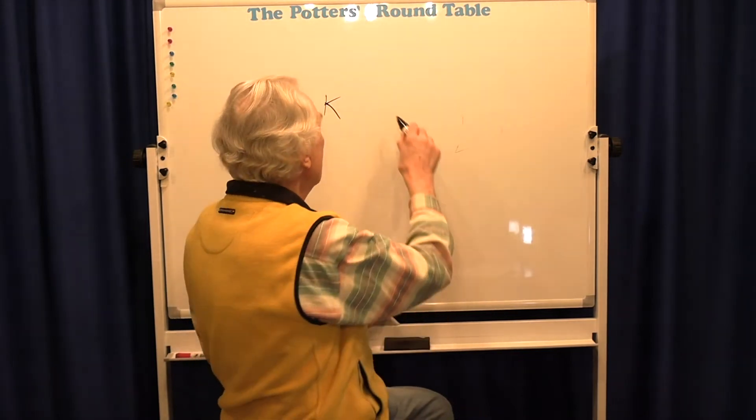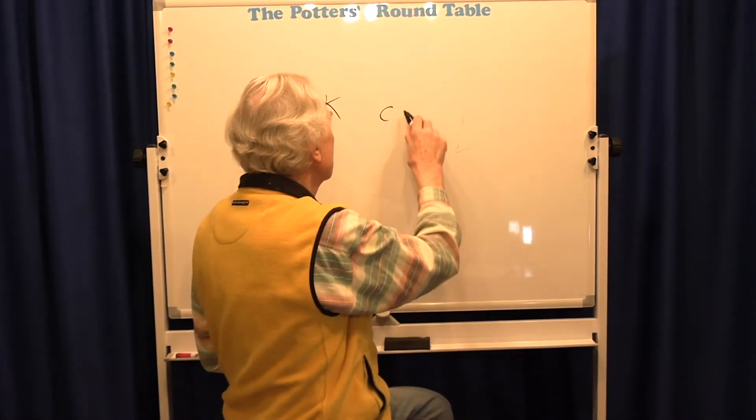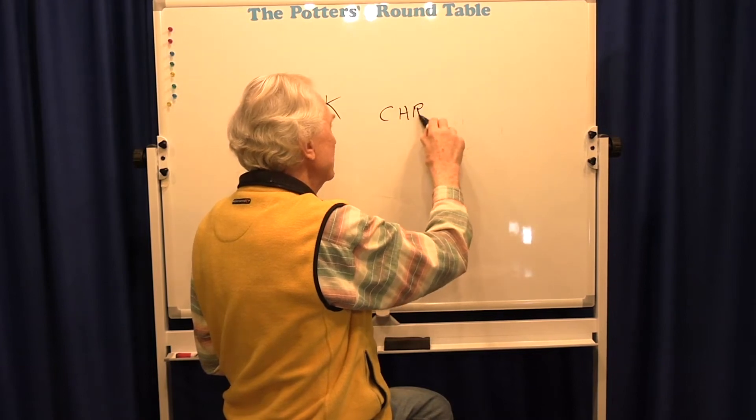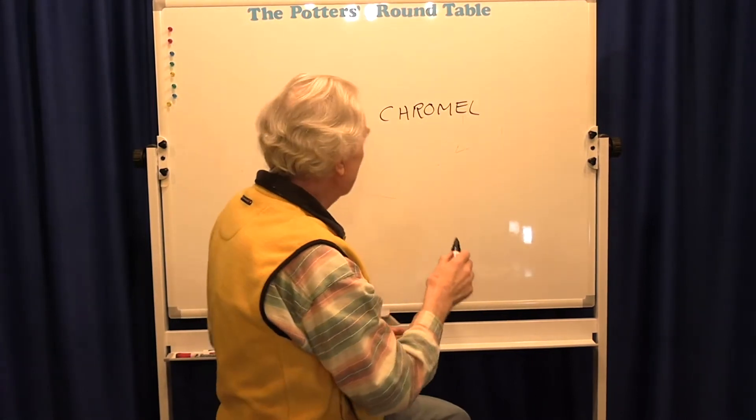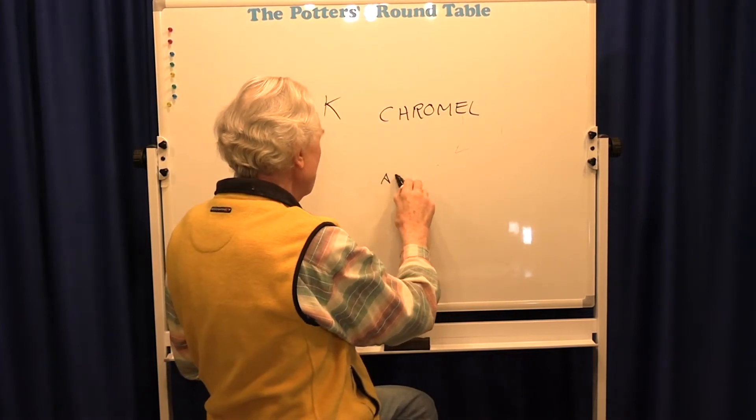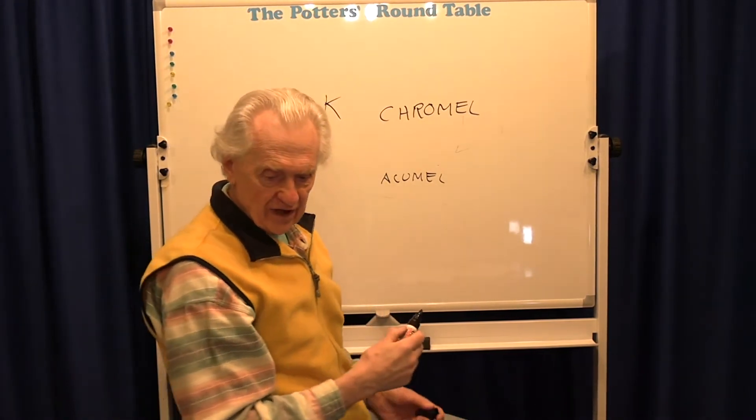One of them is called the type K thermocouple, and this consists of two wires, one of which is called chromel—this is the name of an alloy, a metal alloy—and the other one is called alumel. Those are the names of the alloys.